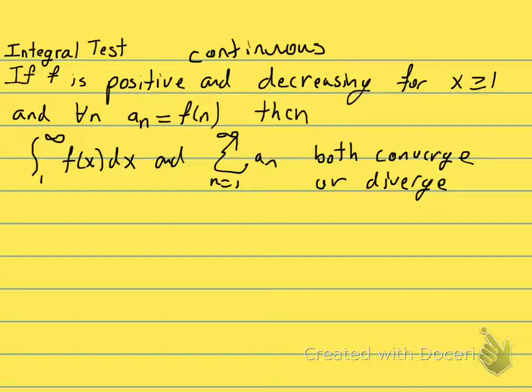then the improper integral from 1 to infinity of f(x)dx and the sum from 1 to infinity of this series aₙ both converge or diverge.